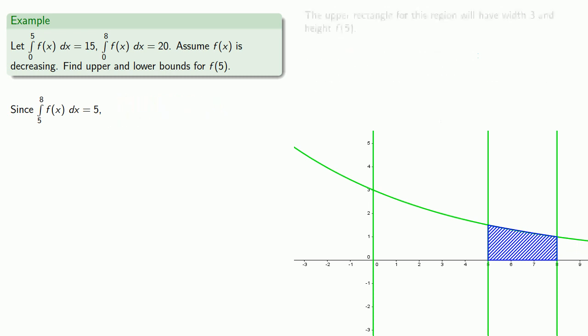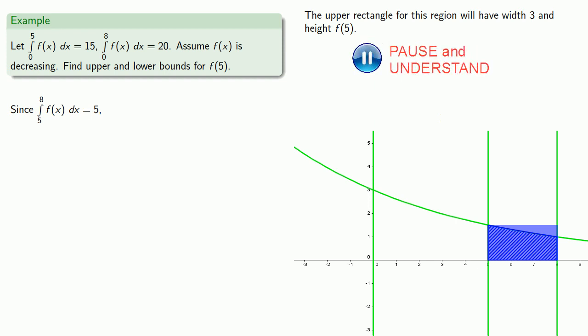So the upper rectangle for this region has width of 3 and height of f of 5. And since this must exceed the actual area this means that 3 times f of 5 must be greater than or equal to 5.